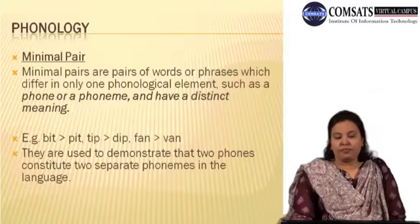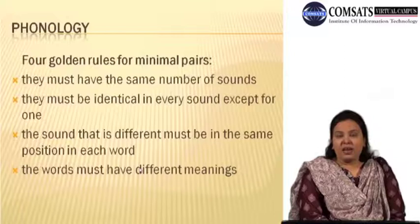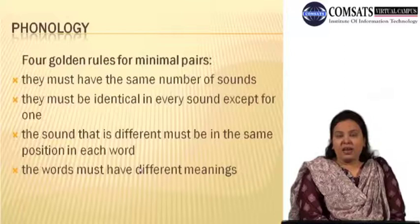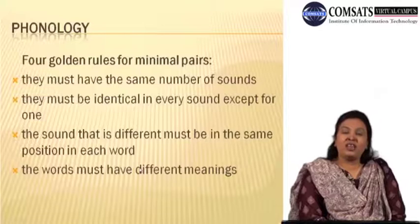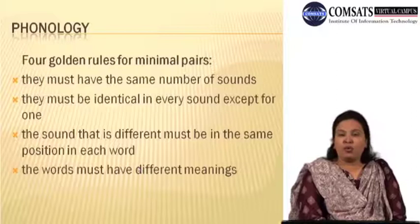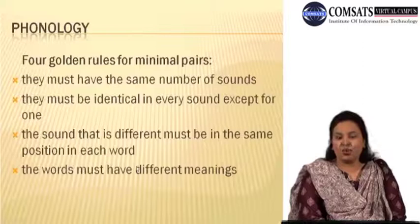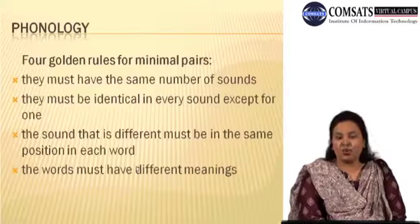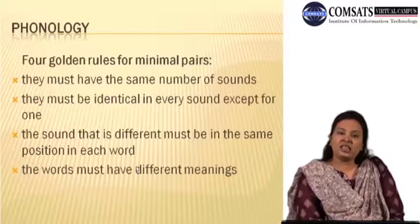There are four golden rules for minimal pairs in English. Rule one: the minimal pairs must have the same number of sounds. We can call 'pit' and 'path' minimal pairs, but 'pit' and 'packet' cannot be minimal pairs because the number of phonological elements is different in both words. Rule two: the minimal pairs must be identical in every sound except for one — one phonological element is changed but all other phonological elements should be the same. Rule three: the sound that is different must be in the same position in each word.